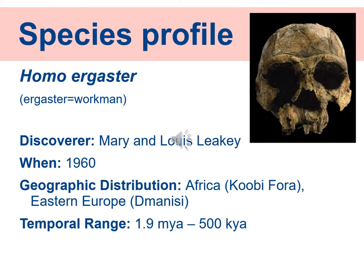Here's the key point: Homo erectus is the first hominid that ever left Africa. All the earlier ones are found only in Africa. At about 1.9 to 1.8 million years ago, there is a major transition in body form where the legs become longer than the arms proportionally. Arms longer than legs is an ancestral ape-like trait, but it's not until Homo erectus that we have longer legs — a modern body proportion. And once that happens, Homo erectus/ergaster begins to leave the African continent and explore other parts of the world.